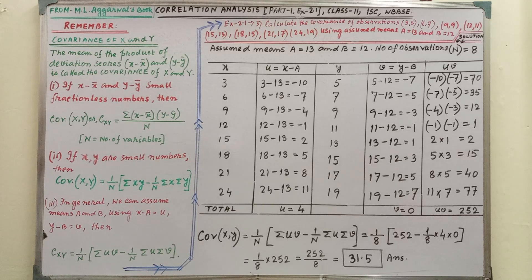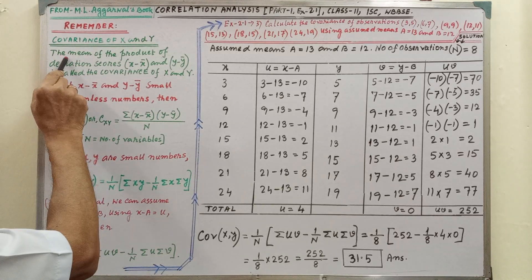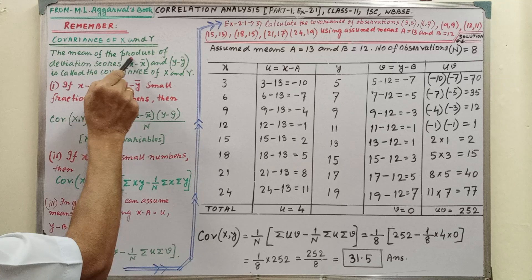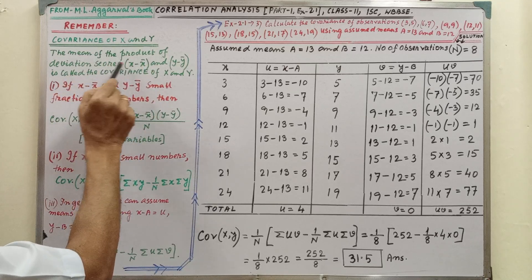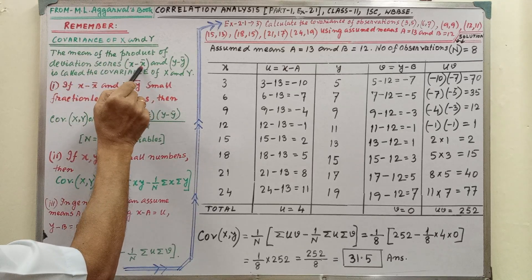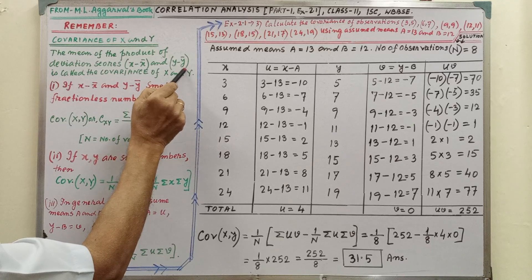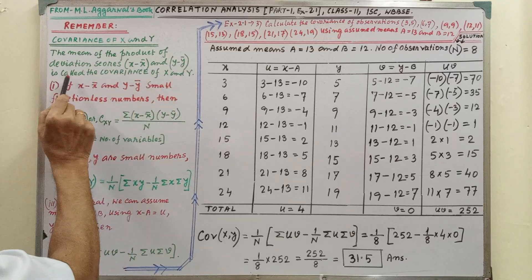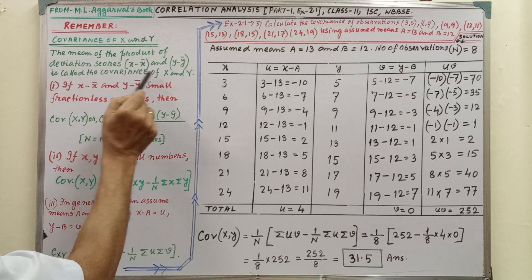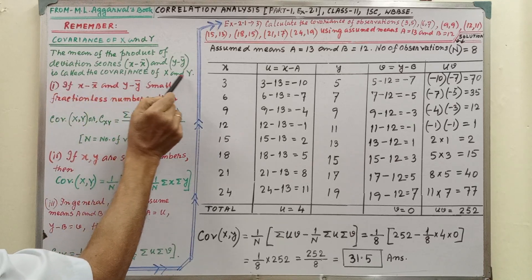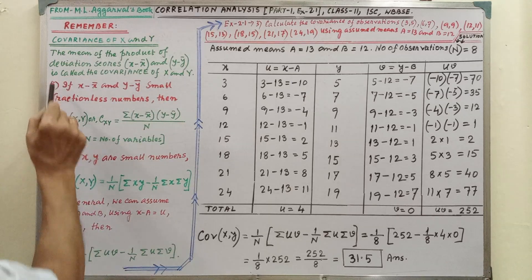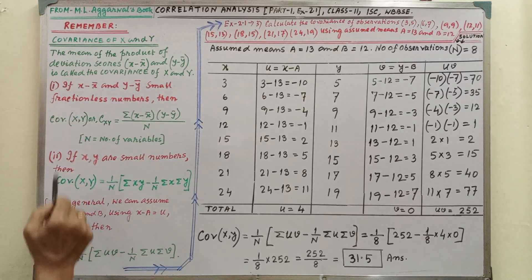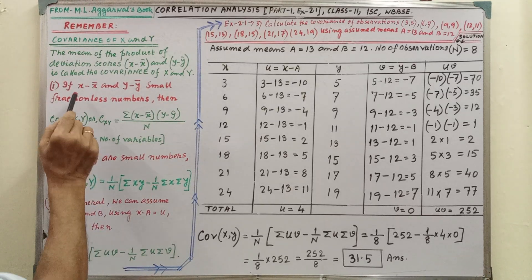Covariance of x and y. Covariance means the mean of the product of deviation scores — x minus x-bar and y minus y-bar — is called the covariance of x and y. There are three conditions and three forms.